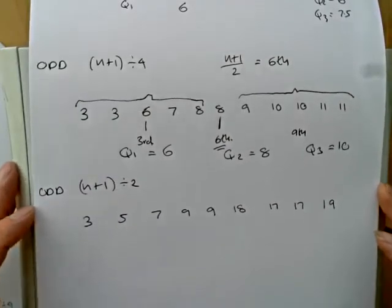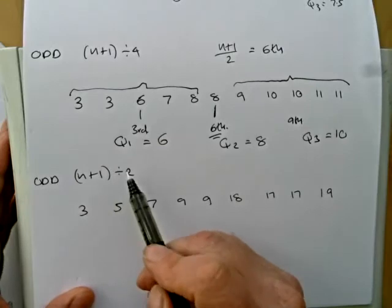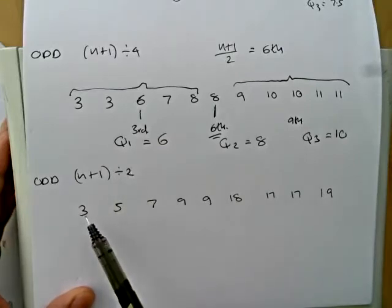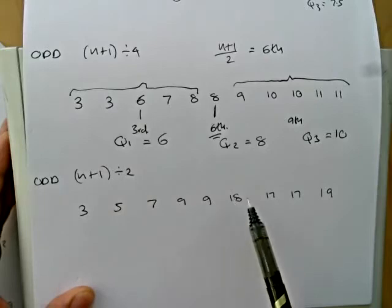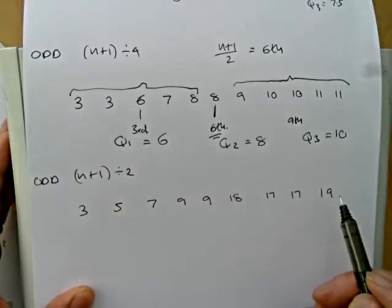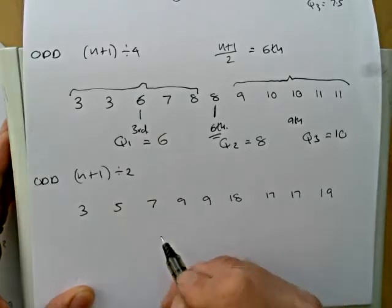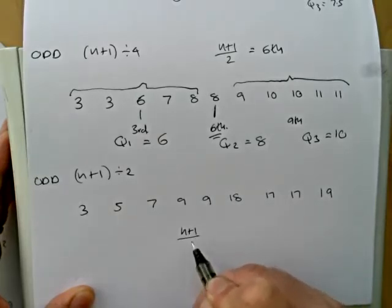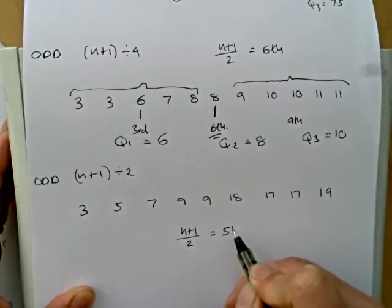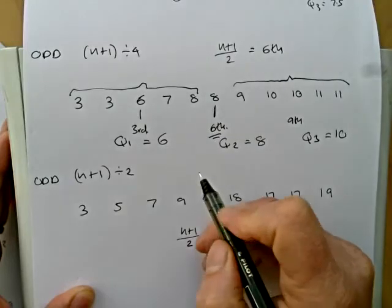So on to the last list. If the list is odd and n plus 1 only divides by 2, we've got 9 numbers. 9 plus 1 is 10. 10 only divides by 2, not 4. We'll find the median in the usual way. n plus 1 divided by 2 will be the fifth number. So there's Q2.